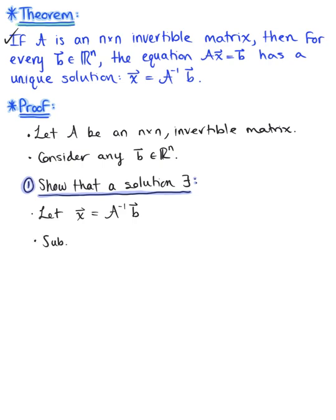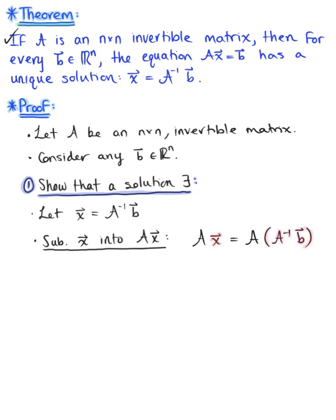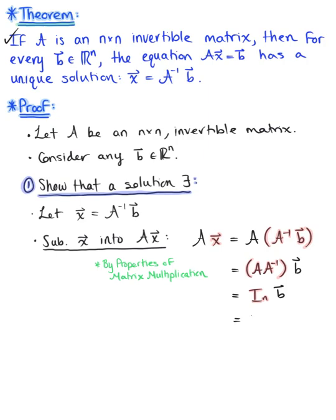To do that, let's substitute vector x into the matrix equation — matrix A times vector x. We have matrix A multiplied by vector x, replacing x with the inverse of matrix A multiplied by vector b. By properties of matrix multiplication, we can rewrite this as matrix A multiplied by the inverse of matrix A, multiplied by vector b. We have matrix A multiplied by its inverse, so this equals the n by n identity matrix multiplied by vector b, which by matrix-vector multiplication properties equals vector b.